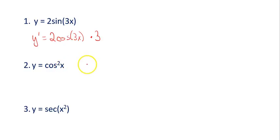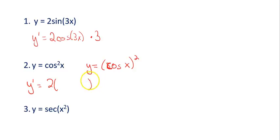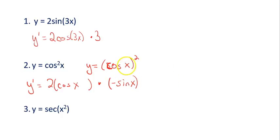For example 2, cosine squared x really means cosine of x, all squared — the whole thing. So you have to do a chain rule. For the derivative, do the outside first: bring the 2 down as an exponent, giving 2 times cosine of x to the first, keeping the inside the same. Then multiply by the derivative of the inside — the derivative of cosine is negative sine of x. Since x is plain, the derivative is just 1, so you don't need to write anything else.